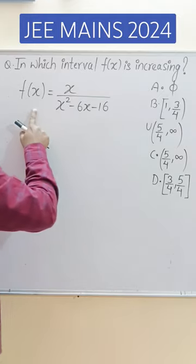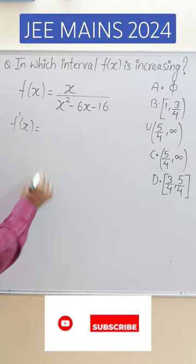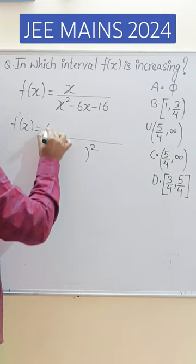In which interval is f(x) increasing? First of all, we will find the derivative. What will happen for f'(x)? If we have a quotient rule, then we will get the denominator squared, and then x derivative is 1 into x squared minus 6x minus 16.